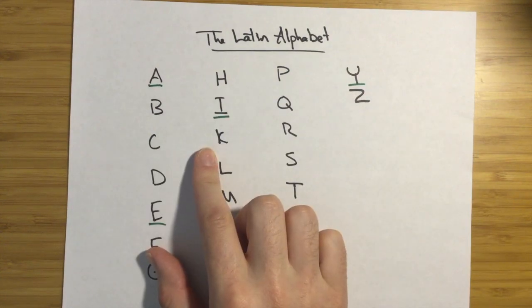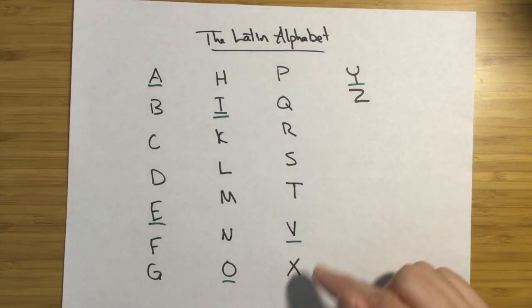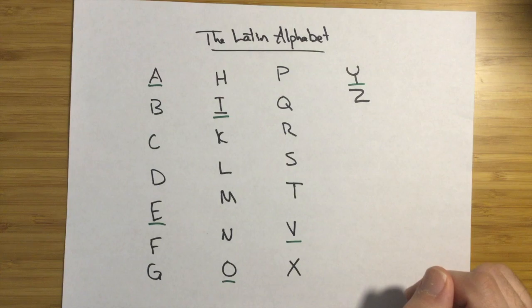There are some differences, so you'll notice some things are missing, like there's no J. There's also no W or U in this list, and so we're going to go over them sort of letter by letter.